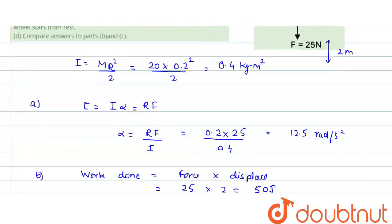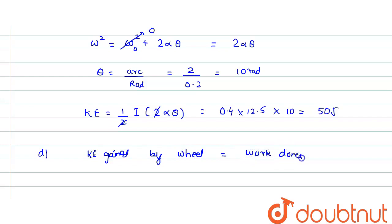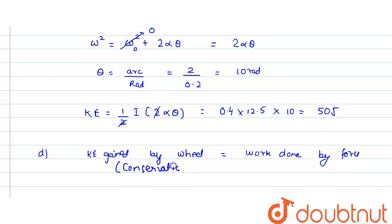In part (d), we compare the answers of (b) and (c). The work done by the force in (b) is 50 joules and the kinetic energy gained by the wheel in (c) is also 50 joules. This means the kinetic energy gained by the wheel equals the work done by the force, which is essentially conservation of energy. Since there is no friction, energy is conserved — frictionless surfaces.